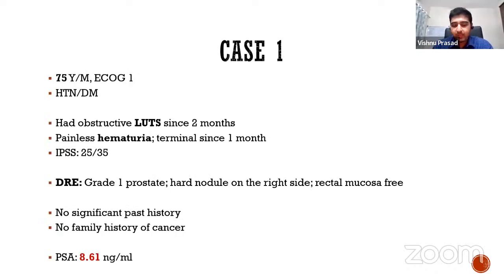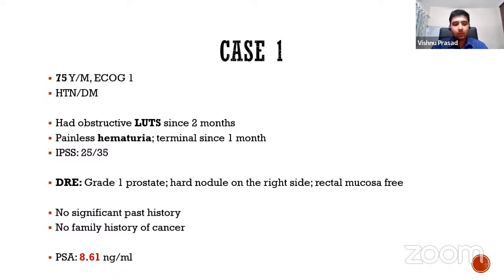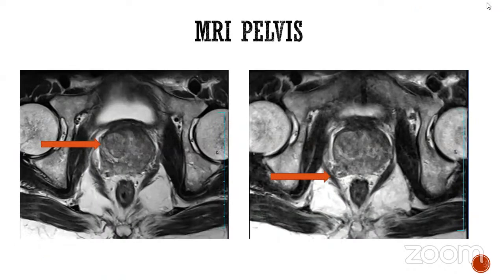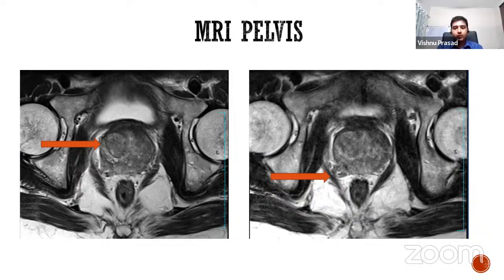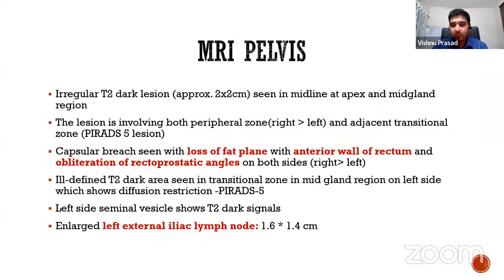We have a 75-year-old male patient with an ECOG status of 1. He is a known case of hypertension and diabetes. He came to us with obstructive LUTS since two months and painless terminal hematuria since one month. His IPSS score was 25. Rectal examination revealed a hard nodule on the right side but the rectal mucosa was free and the size was grade 1. His PSA was 8.61.